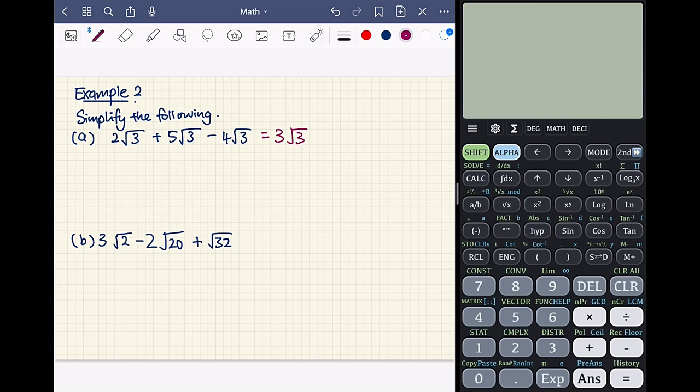In part B, we have 3 root 2 minus 2 root 20 plus root 32. So here we need to break down 20 and 32. We have 3 root 2 minus 2 times of root 4 times 5. So we can break down 20 into 4 times 5. And we have plus square root of 32, which can be broken down into 16 times 2.